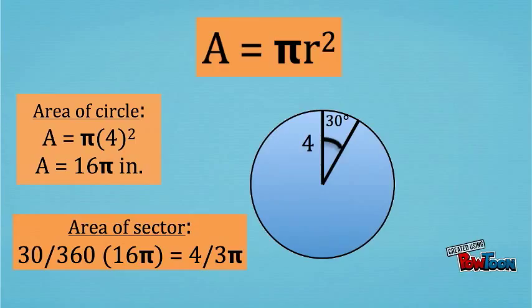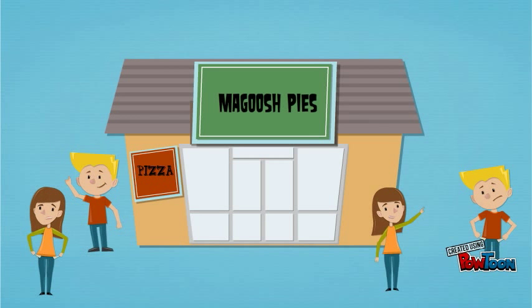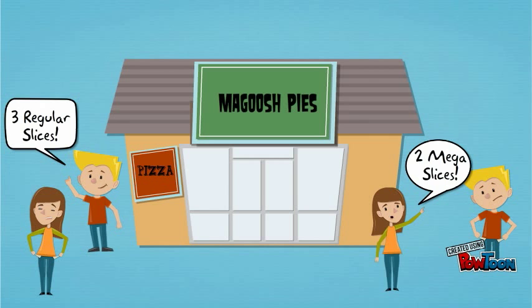Note that we don't need to simplify the fraction first, 30 over 360. It's all just getting multiplied in anyway. Now let's go back to our pizza problem. Would each student get more pizza from three regular slices or from two mega slices?